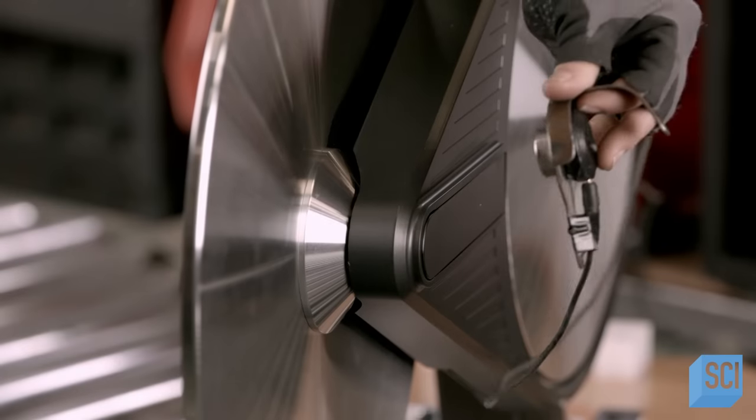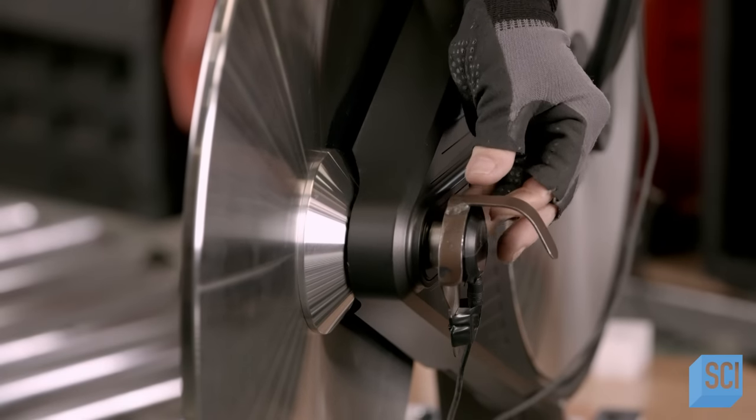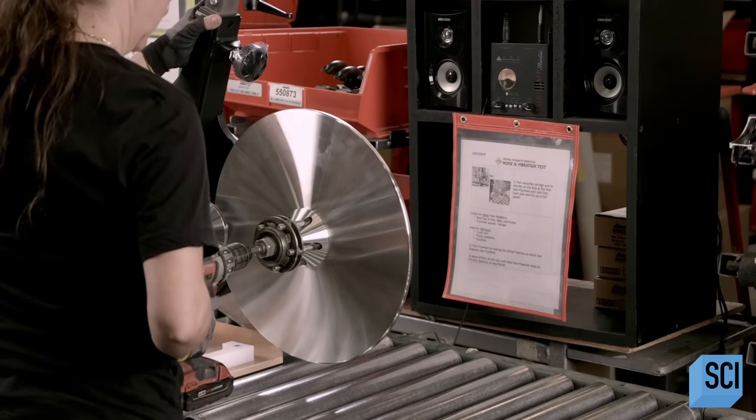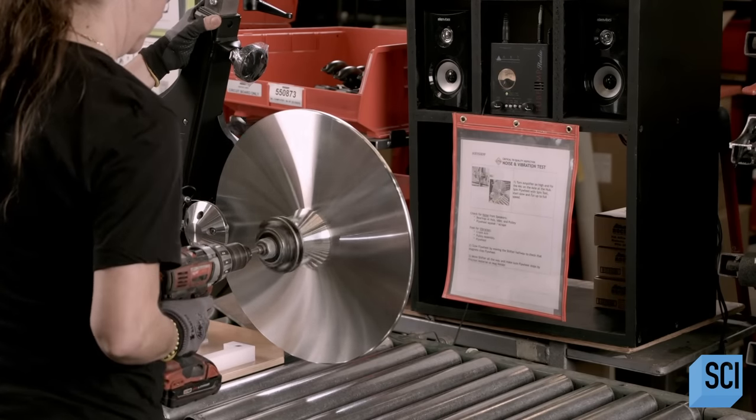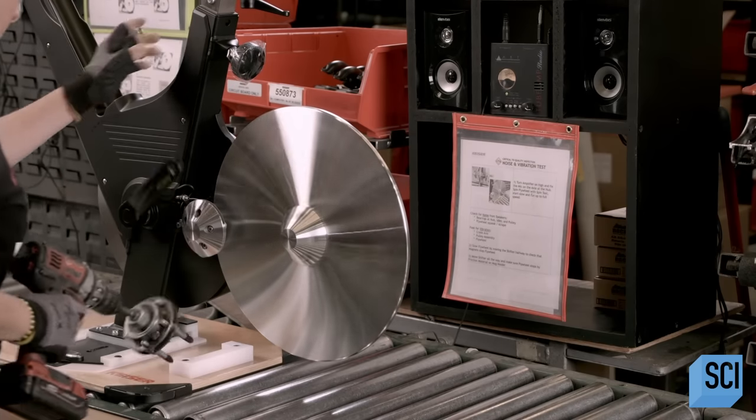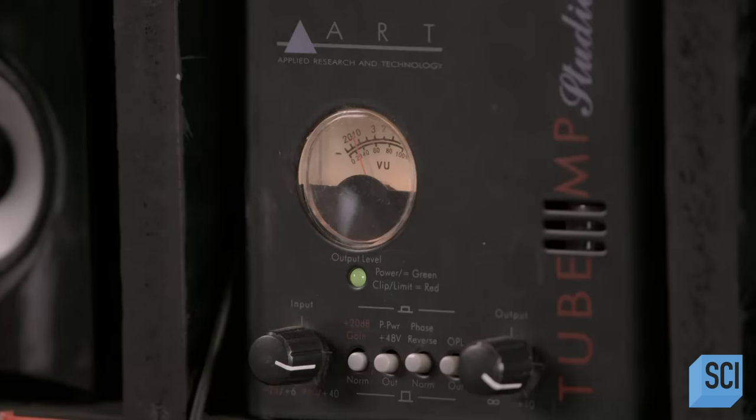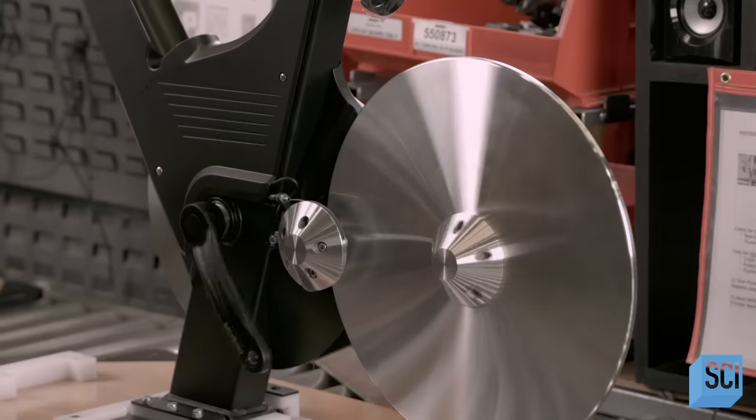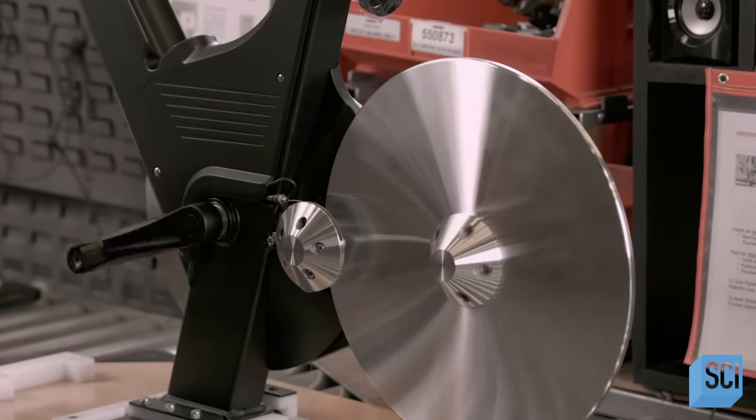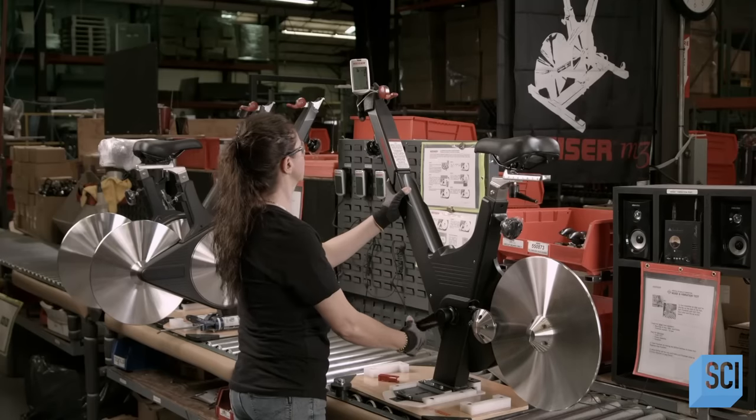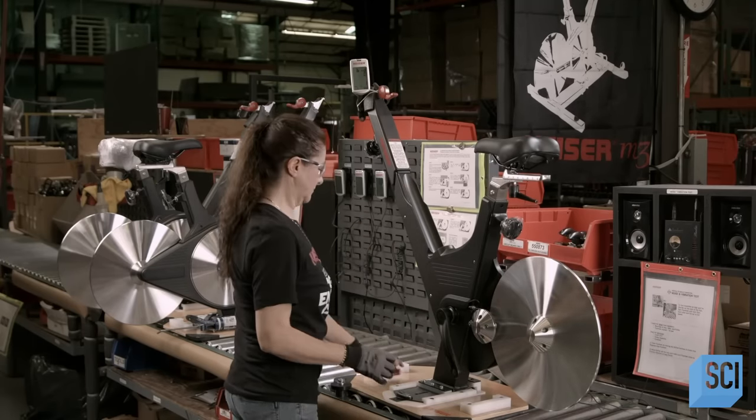She now places a magnetized microphone on the axle and spins the flywheel at a high rpm. This is a test. The bike must operate noiselessly. The decibel meter confirms the noise level is negligible. She also feels the frame for unwanted vibrations.